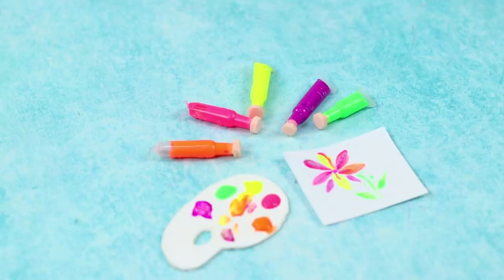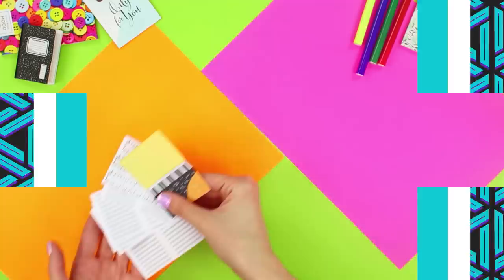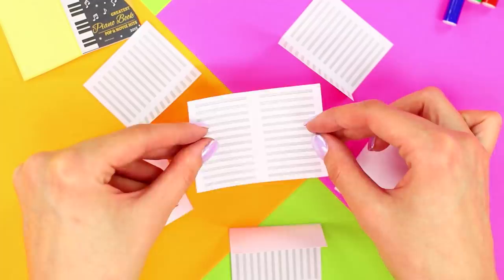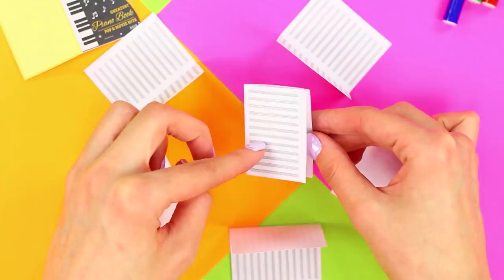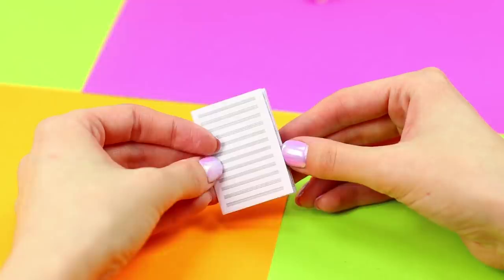For the next life hack, print a mini notebook cover and tiny sheet music. Fold the sheets in half. Collect them as a brochure. Glue the blank sides of the sheets with a glue stick. Attach a cover to the sheets.